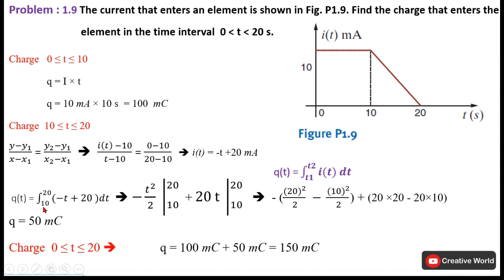For the interval 10 to 20 seconds, charge is calculated using Q = ∫I dt. Integrating I(t) = −t + 20 gives (−t²/2 + 20t) evaluated from 10 to 20. By substituting the time limits and solving, Q = 50 milli-coulombs. The total charge from 0 to 20 seconds is 100 + 50 = 150 milli-coulombs.